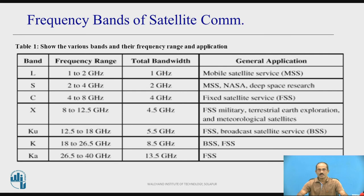These are the frequency bands for satellite communications. In the first column there are various bands available, the second column shows the range of frequencies used for each band, the third column shows total available bandwidth, and their general applications. The most commonly used bands are C, Ku, and K bands, which are discussed in the next slides.